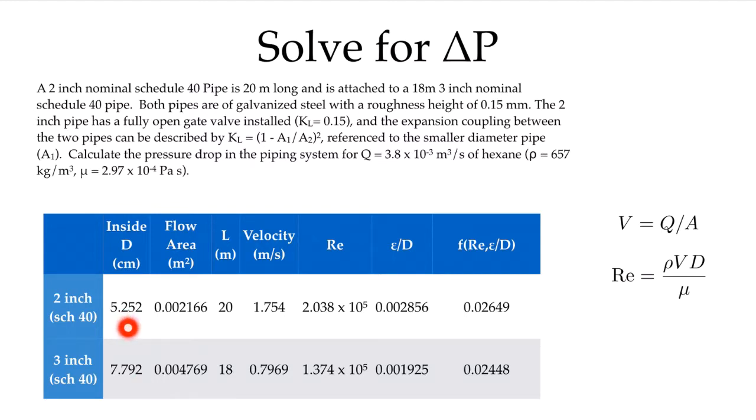I can convert each of those to meters, square it, and multiply by pi over 4 in order to get the flow area. So that's the inside flow area for each of those in meters squared. I've just rewritten here for convenience the length of our pipe, 20 meters in the 2 inch pipe, 18 meters in the 3 inch pipe. And now given that defined flow rate of 3.83 times 10 to the minus 3 cubic meters per second, I can divide by the respective pipe area to get the velocity that we see in the 2 inch pipe and the velocity in the 3 inch pipe.